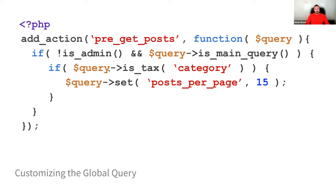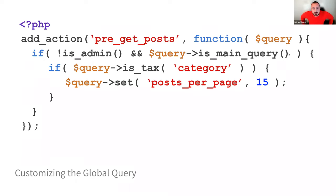The best thing to do is always say if it is not in the admin, and then check for a particular query. In certain cases you might want to say this should affect all archives, so you can use $query->is_archive or $query->is_taxonomy. But in most cases you can just use $query->is_main_query(), which ensures you're not affecting plugin queries — you're just affecting the main WordPress query. Here we're saying if the query is taxonomy 'category', then we set posts_per_page to 15. So even if WordPress is set to 10 posts, this hook overrides it to 15 for category archives. Everything else will still use 10.